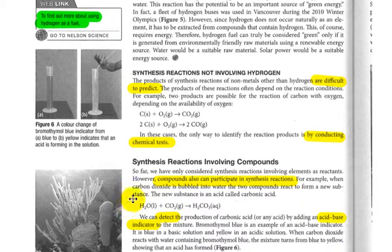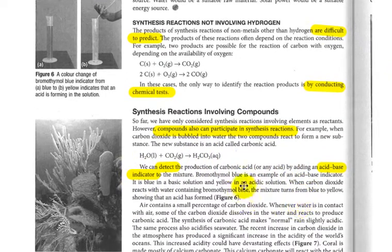Compounds can also participate. For example, water and carbon dioxide coming together to make H2CO3 carbonic acid. It's difficult to predict how that happens without using some sort of acid-base indicator, like bromothymol blue, which is blue in a basic solution and yellow in an acidic solution. If it turns yellow, it gives us an indication that we're dealing with an acid there.